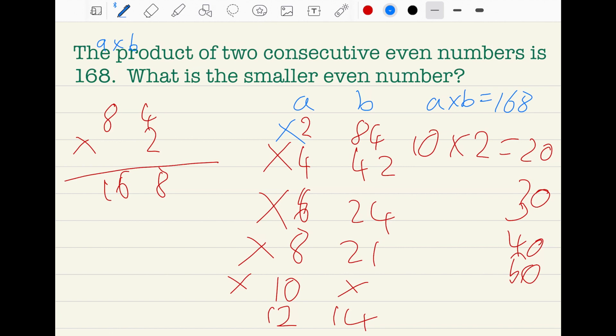But what is the smaller even number? The smaller even number is 12 because 12 comes before 14 and it is smaller than 14. So the answer is 12. Thank you for watching. I hope you like and subscribe.